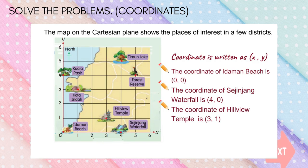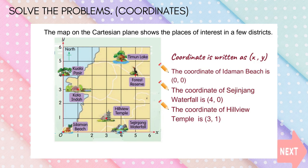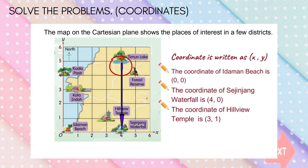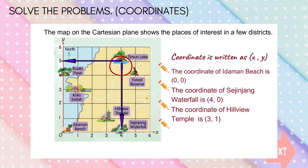Now look at Timun Lake. Timun Lake is 4 units to the east and 5 units to the north of the origin. So the coordinates of Timun Lake are written as (4, 5).